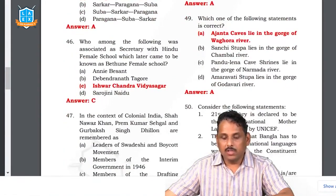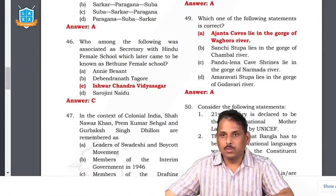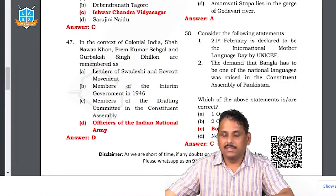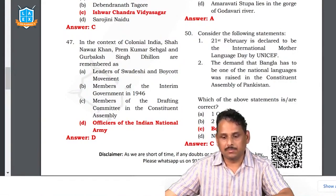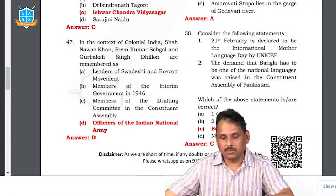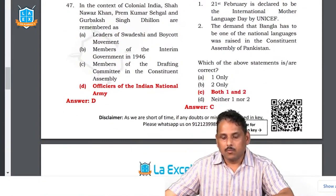Question 47: which statement is correct? Ajanta caves lie in the gorge of the Waghora River — if you go there you can see this. Question 50: the 21st February is declared as International Mother Language Day — note it was declared by UNESCO, not UNICEF. India does not have one single national language; we have various official languages. The demand for Bangla to be a national language was raised in the Constituent Assembly of Pakistan — east Bangladesh's Bengali-speaking population formed East Pakistan, today's Bangladesh. The Urdu-speaking Punjab province did not uphold it. Both one and two are the right answers.